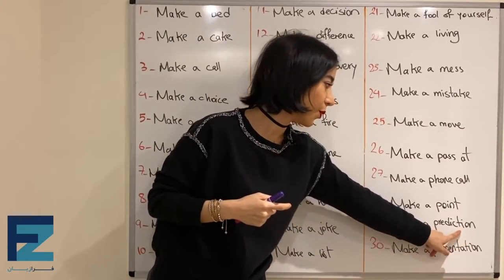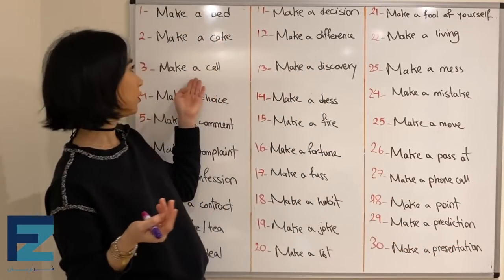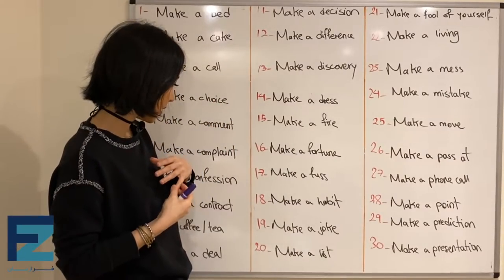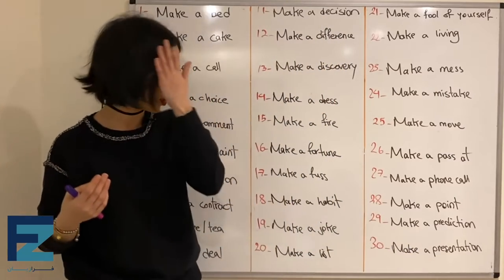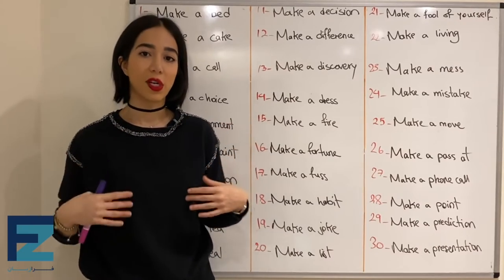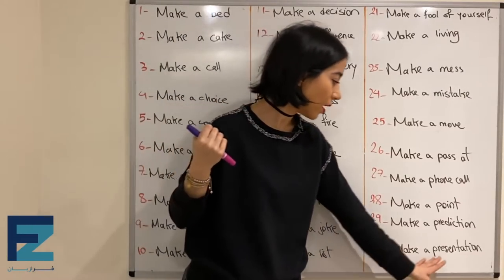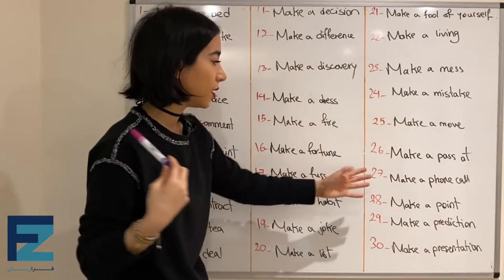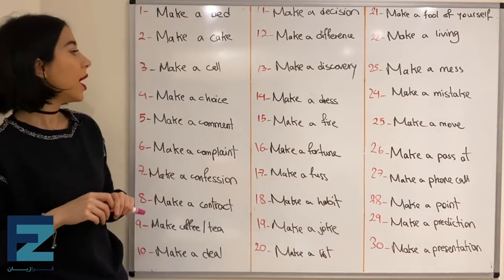یه سری از این کالوکیشن‌ها رو میتونین با verbشون هم بیان بکنید — make a prediction: to predict; make a call: to call; make a joke: to joke. Number thirty: make a presentation — to present something in front of a crowd, یه چیزی رو جلوی یک جمعیت ارائه دادن.